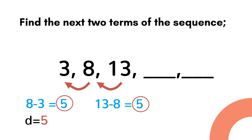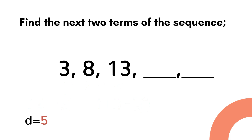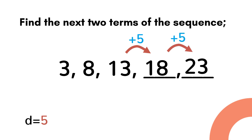Now we can add the common difference to the last term given. That is 13 plus 5 is equal to 18, and we repeat the process: 18 plus 5 is equal to 23. Therefore the next two terms of the sequence are 18 and 23.